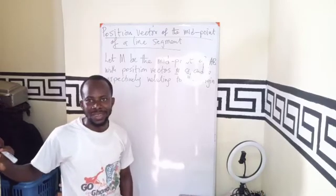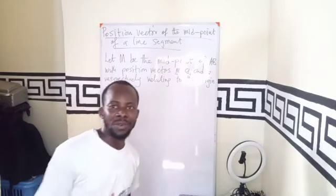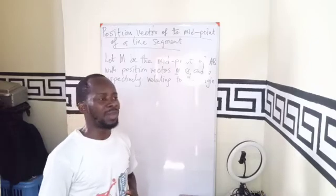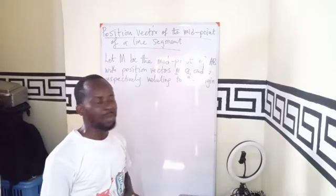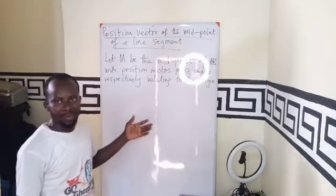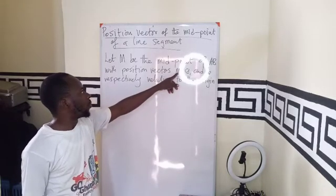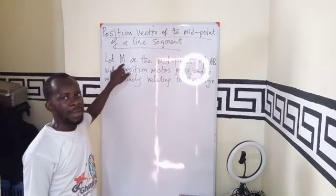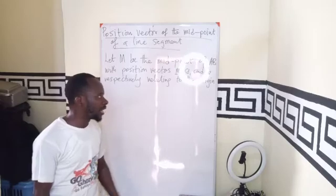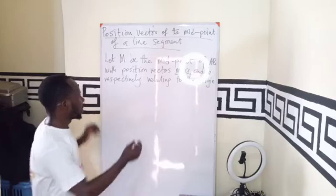We are still on vectors. This time around we want to find the midpoint of a line segment. We want to find the position vector of the midpoint of any line segment. So we are saying that let M be the midpoint of any line segment, say AB, with the position vectors. The M is the position vector of M that is placed between A and B, where A and B are also position vectors of AB relative to the origin.